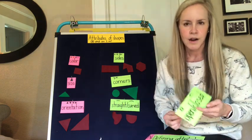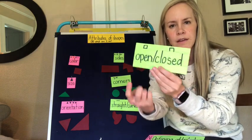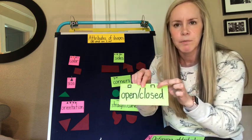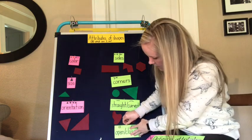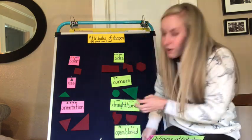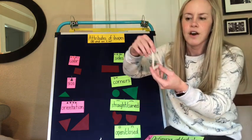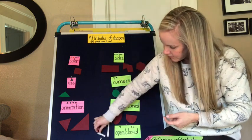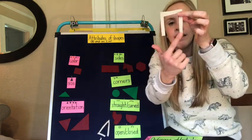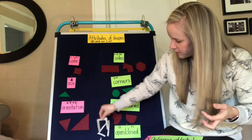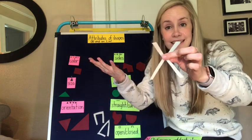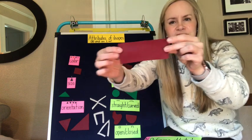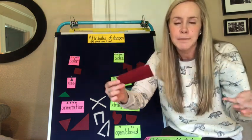One more attribute of shapes that you might not have heard before is if a shape is open or closed. On this board I have a bunch of shapes that are open. This looks like a triangle, but it's open — open means anything that has a gap. Here there's a big gap, and this is also an open shape. But some other shapes don't have any gaps — if it has no gaps, then it's closed.